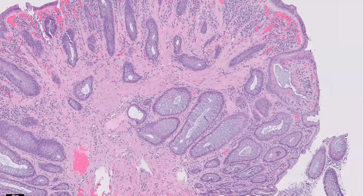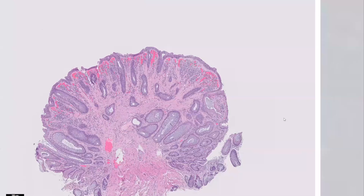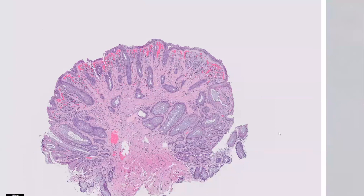Mucosal prolapse polyps are completely benign. They are commonly found in areas more prone to prolapse changes, limited to the left side of the colon and specifically the lower left side — the rectum and sigmoid colon. I'll stop the video here. Next time I will talk more about serrated polyps of the colon, other than hyperplastic polyps which I've already covered. Please like and subscribe and hit that notification button. I'll see everyone next time. Bye.